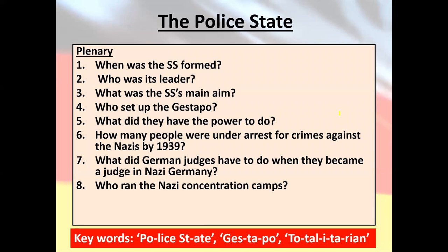To finish things off, here are some questions I'd like you to have a go at answering: When was the SS formed? Who was its leader? What was the SS's main aim? Who set up the Gestapo? What did they have the power to do? How many people were under arrest for crimes against the Nazis by 1939? What did German judges have to do when they became a judge in Nazi Germany? Who ran the concentration camps? And give two types of groups that would have been sent to the camps. Pause this video, go away, spend some time answering these questions, and use the attached resources and your textbook.